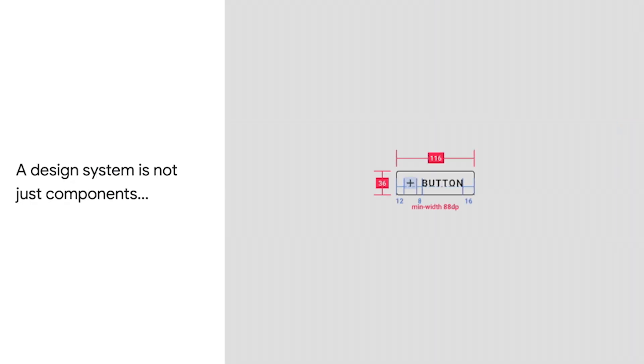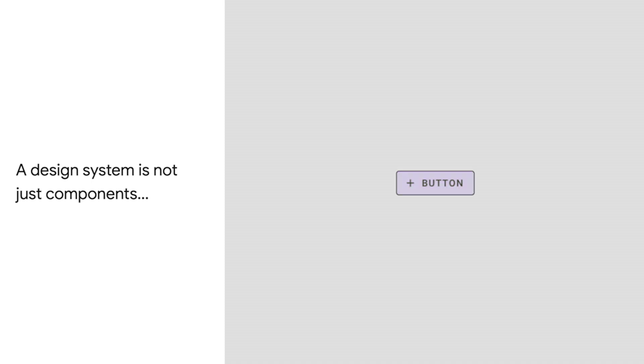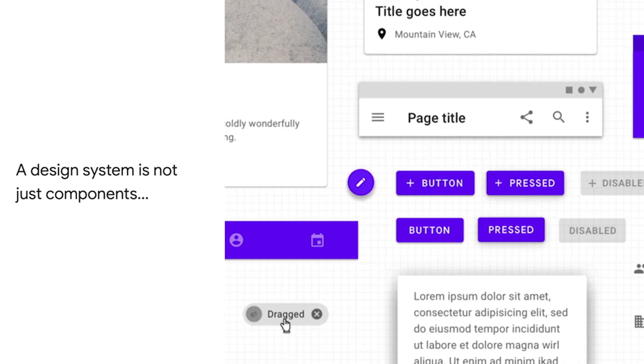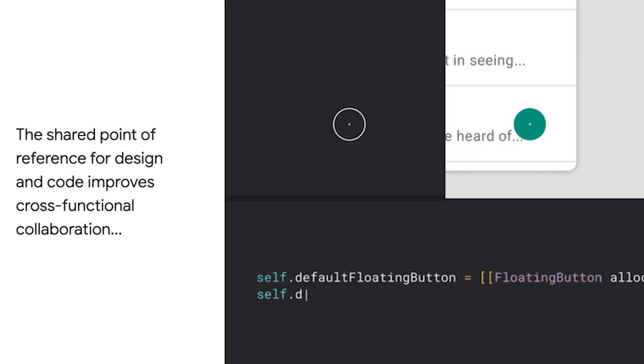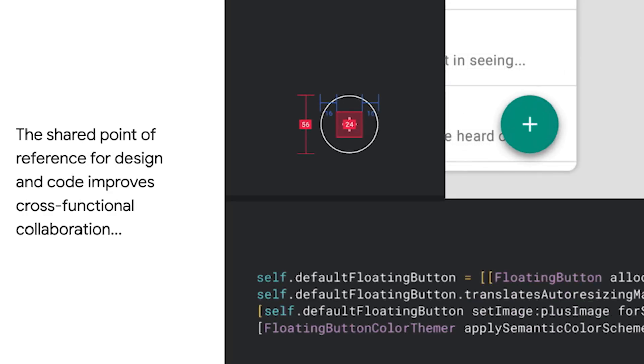When creating a product, it is important to establish a design system, which is a single source of truth that allows a team to design, realize, and develop a product. A design system is a point of reference for design and code, providing a centralized place for things like type, color, and layout practices, which improves cross-functional collaboration.